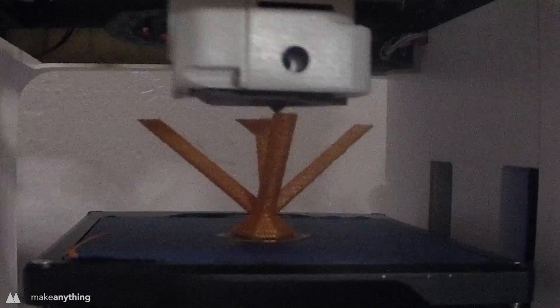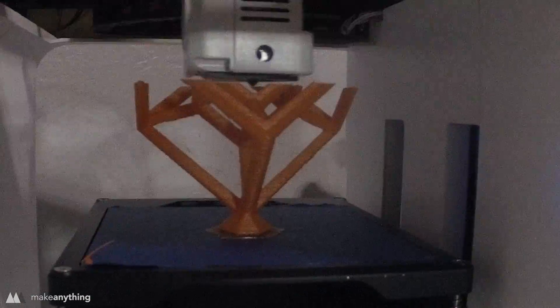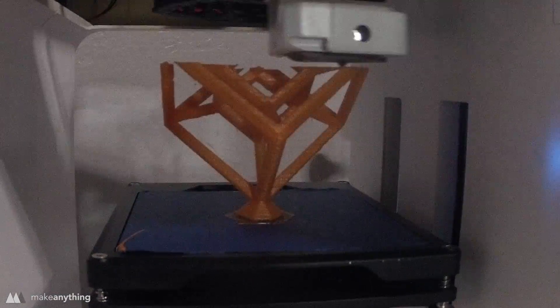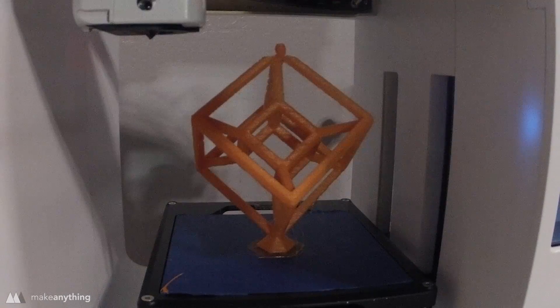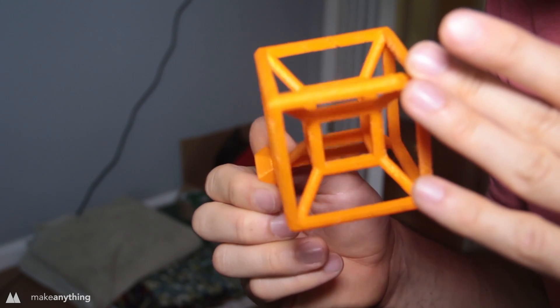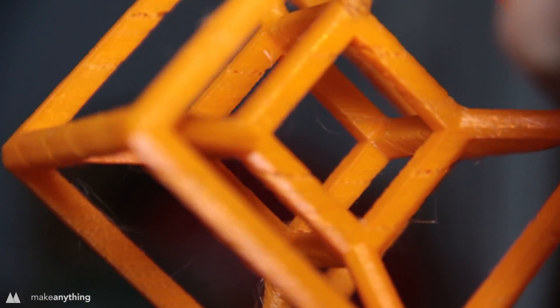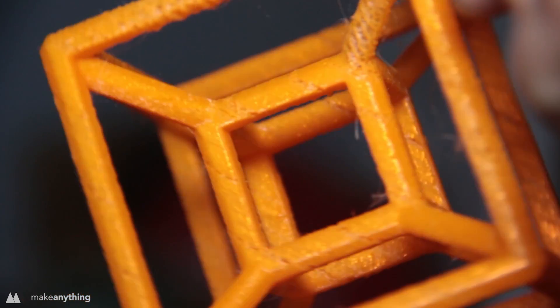So I threw the ultimate challenge at this printer. This hypercube that I designed which has some ridiculous overhangs that FDM printers probably shouldn't even be able to do and yet the obsidian did complete the print. This one wasn't perfect there was a bit of under extrusion but that might just have to do with the settings I used and like I said I'm honestly just surprised that it managed to print the whole thing.